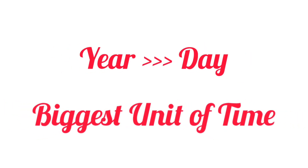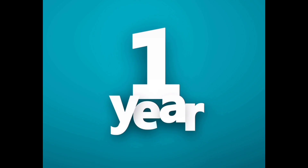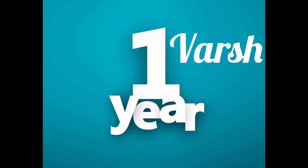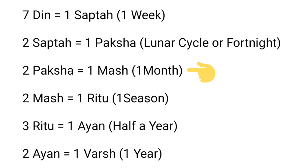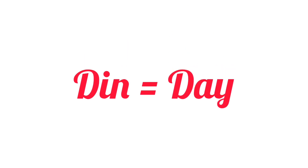A year is known as a Varsha in Sanskrit. One Varsha is made of two Ayan, which you can call half a year. One Ayan is equal to three Ritu. Now one Ritu or a season is equal to two Mass. One Mass or a month is equal to two Paksha. One Paksha or a fortnight is made of two Sapta or weeks. And one Sapta or week is equal to seven Deen — a day of 24 hours.